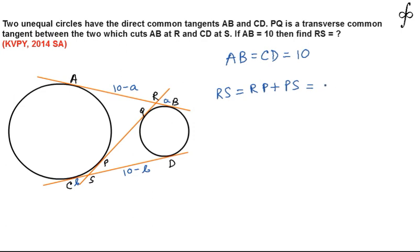We can write down RS to be equal to RP plus PS. Now, RP is nothing but RA and PS is nothing but CS, because the length of the tangent from R to the circle, bigger circle RA should be equal to RP.